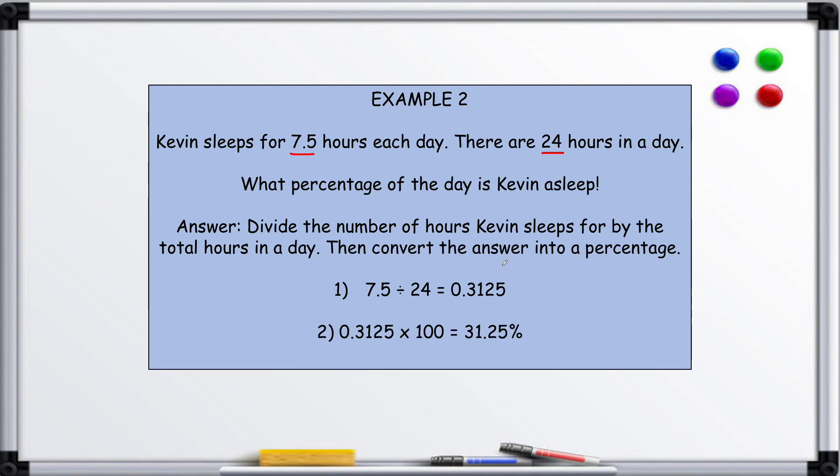And then 0.3125 multiplied by 100 equals 31.25 percent. Just remember, if you don't get a decimal, then you've done it the wrong way around. And a lot of these decimal questions are on the calculator paper, so don't worry about having to do the division bus stop method or anything like that.